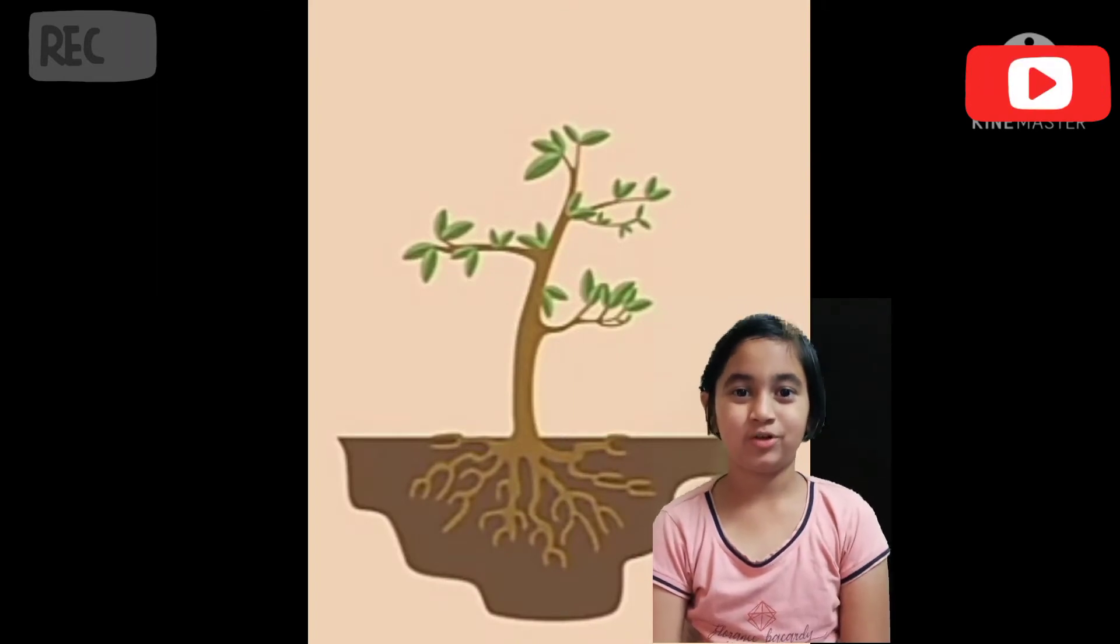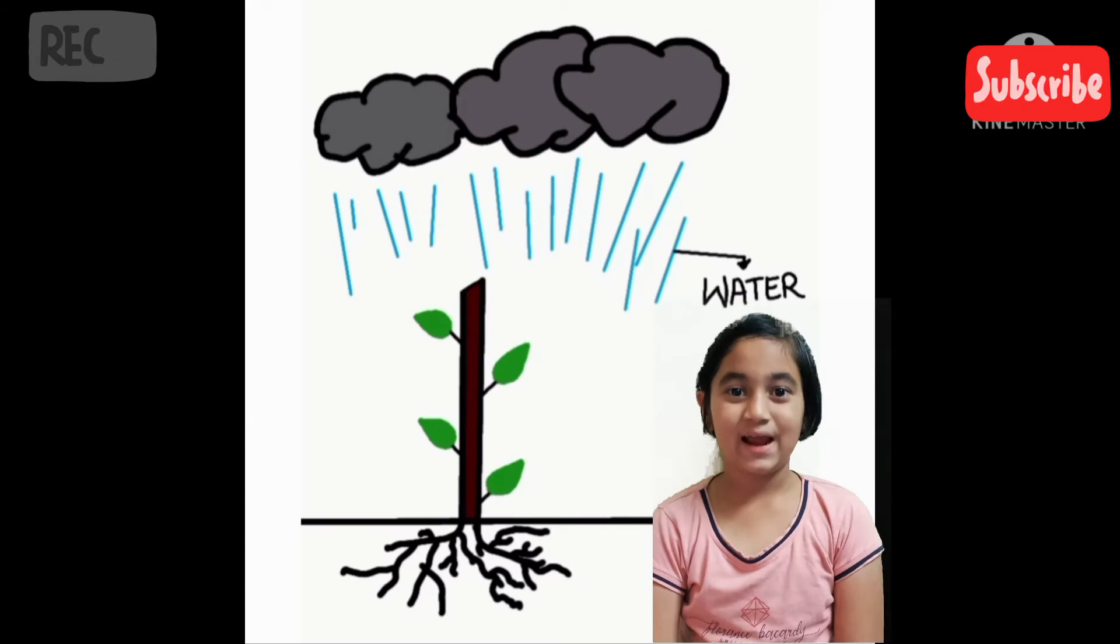Plants make their own food with the help of sunlight, water and carbon dioxide.